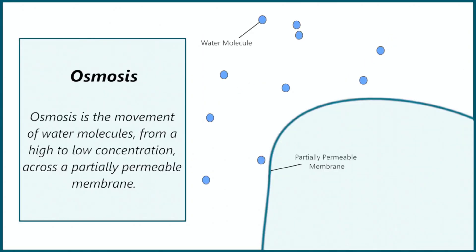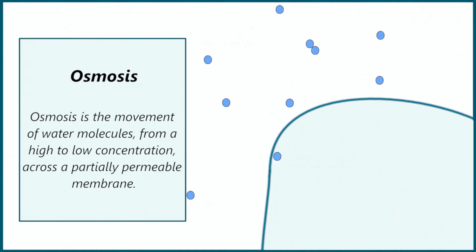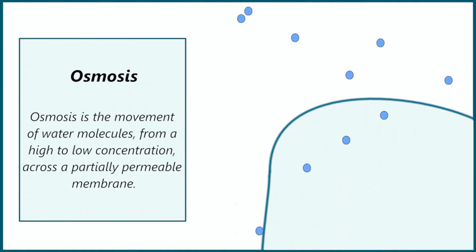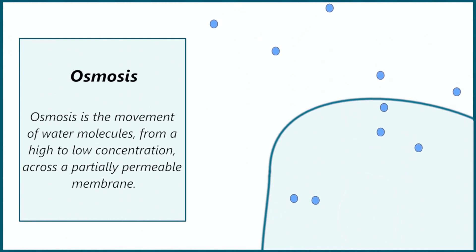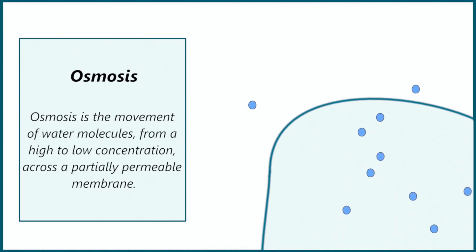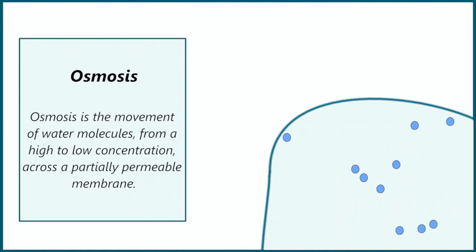Osmosis is the movement of water molecules from a high to low concentration across a partially permeable membrane. This essentially means the movement of water from where there is more of it to where there is less of it, and usually passing through a cell membrane.